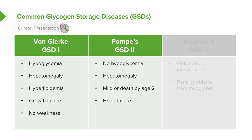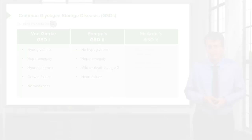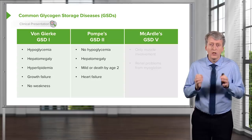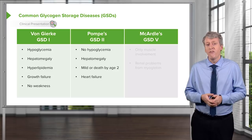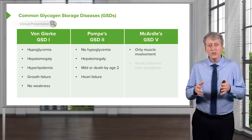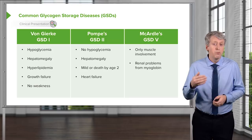The last example would be McArdle's disease — I think of muscle, muscle McArdle's. This is glycogen storage disease type 5. It really only has muscle involvement, so these patients develop weakness but not as much of the other symptoms. They may develop renal problems from myoglobin breakdown and sludging in the kidney causing renal damage, so monitoring for that is important.